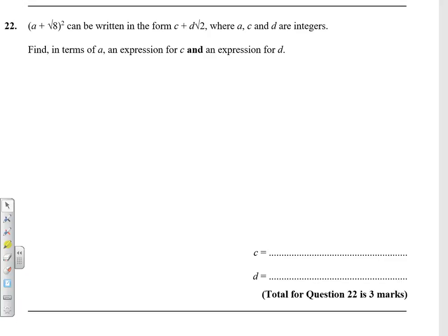Question 22. A plus root 8 all squared can be written in the form C plus D root 2 where A, C and D are integers, so they're whole numbers. Find in terms of A an expression for C and an expression for D.